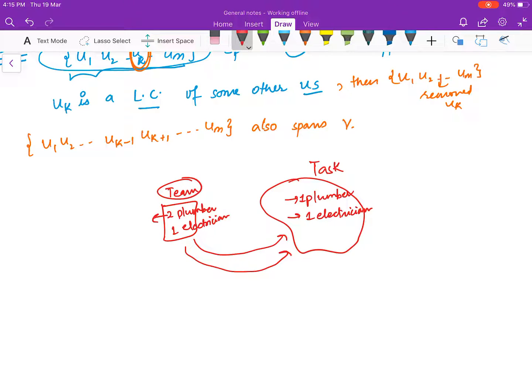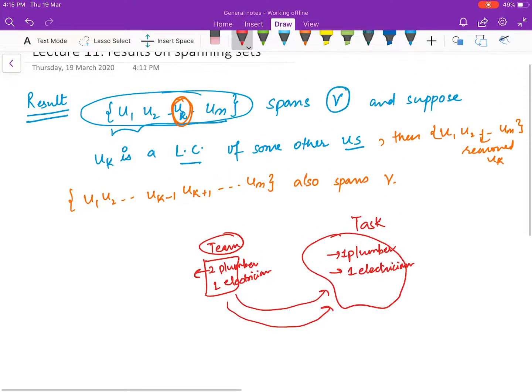So same is here. Here this uk is actually dependent on some of the us. It means that it is an element which is not having anything new. So everything which uk contains already is there in some of the us, so you can remove this particular entry and still you have the property of spanning.